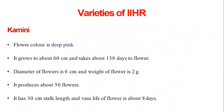Now let us see some varieties released by research organizations. The first is IHR — Indian Institute of Horticulture Research. They have released some varieties of China Aster. The first is Kamini — flower color is deep pink, grows about 60 cm, takes about 138 days to flower, diameter of flower is 6 cm, weight is 2 grams, produces about 50 flowers, stock length 30 cm, and vase life of flower is about 8 days.